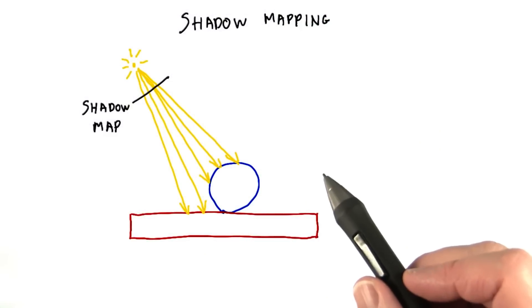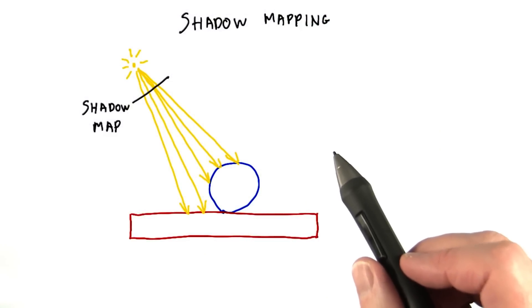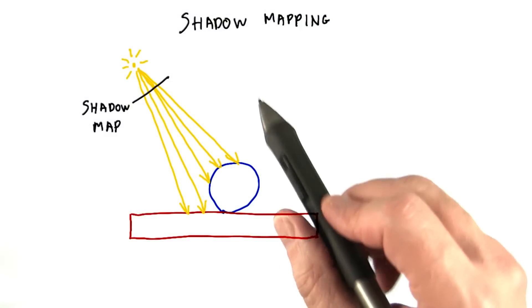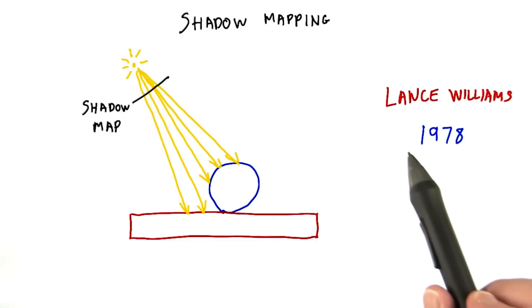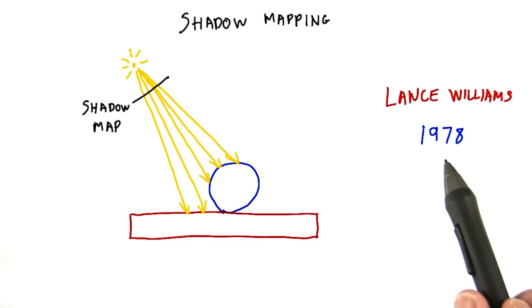Rasterization is focused on triangles rendered from the eye, so we have to work a bit to generate shadows. One popular method of adding these is called shadow mapping. This algorithm dates way back. It was first described by Lance Williams in 1978.